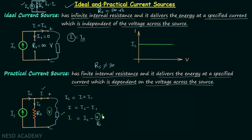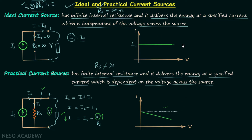When voltage V increases, V over RS increases and therefore current I decreases. When we plot current I versus voltage V, at V equals 0 volts, I equals IS, so the intercept equals the source current IS. This completes the discussion on practical current sources. There are many other important points related to sources which will be discussed in coming lectures.